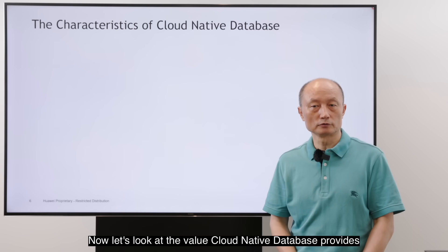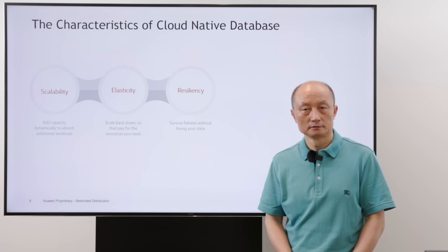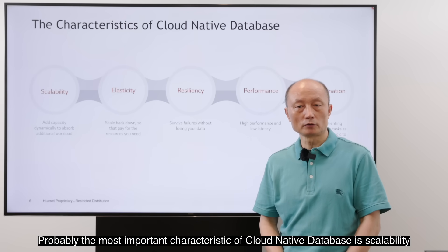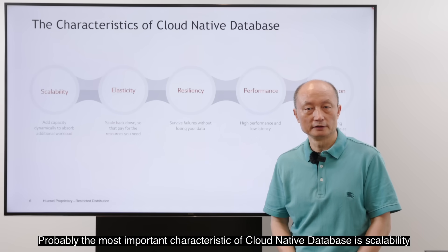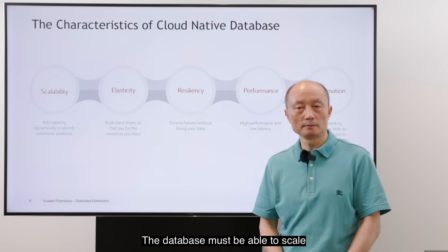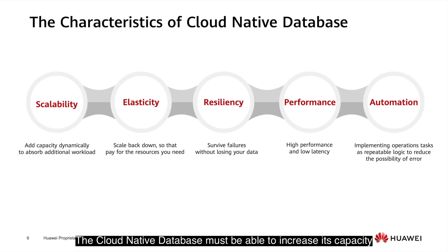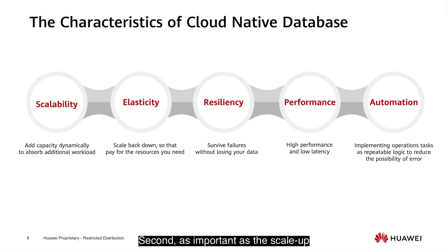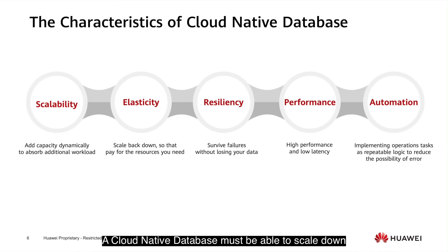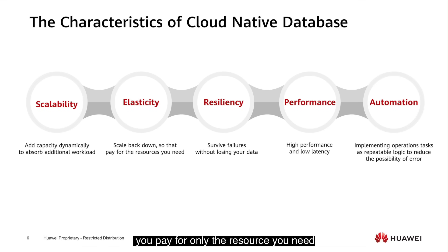Now let's look at the value a cloud-native database provides. The most important characteristic is scalability. The database must be able to scale according to workload. A cloud-native database must be able to increase its capacity and accommodate increases in workload dynamically. Equally important is the ability to scale back down. A cloud-native database must be able to reduce its capacity when the workload decreases, ensuring you pay for only the resources you need.